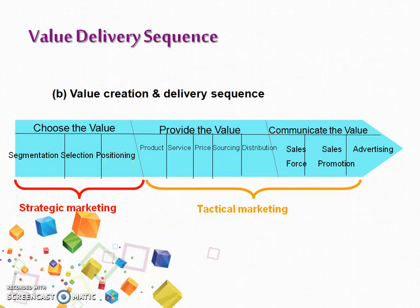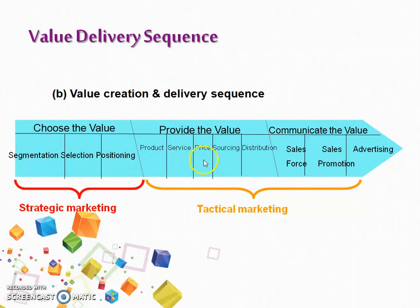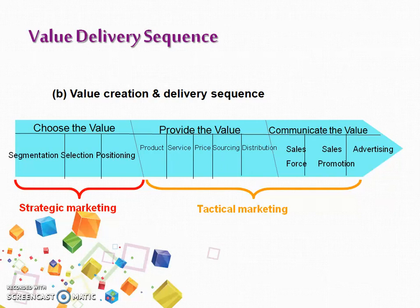After deciding about the target market and what positioning strategy the company is going to follow, the company decides about creating that value. In creation, this involves the product, services to provide along with the product, price, sourcing of raw material, and distribution of the manufactured product. Then comes communication of the value, which is equally important so that the customer feels the product is made for them.